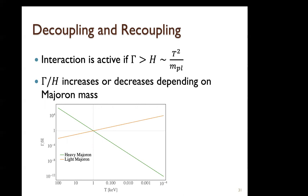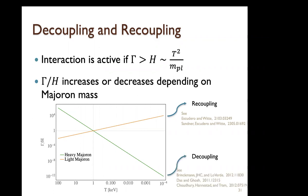Interaction is active when Γ > H, and H scales as T². For the light Majoron case, Γ ∝ T, so Γ/H increases as temperature decreases: the self-interaction was not effective in the early universe but is tightly coupled later — this is the recoupling case. For the heavy Majoron, Γ ∝ T⁵, so Γ/H decreases: tightly coupled early, then starts to free-stream later — this is the decoupling case. In this talk, I focus on the decoupling case.